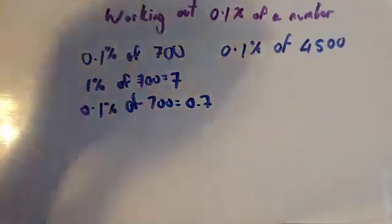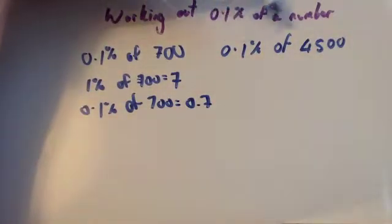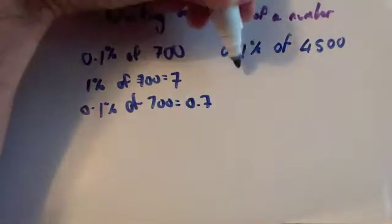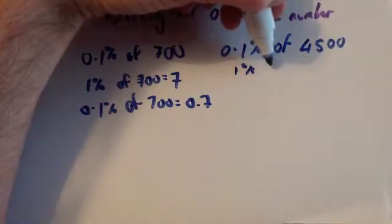And let's have a look at another example. Get 0.1% of 4,500. So you get 1%. So 1% divided by 100.